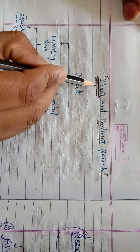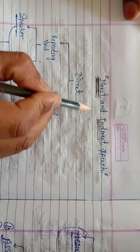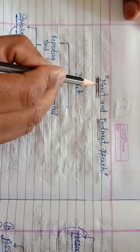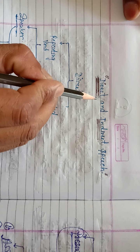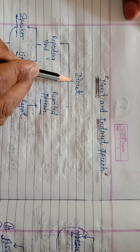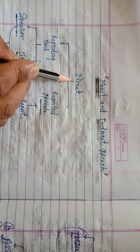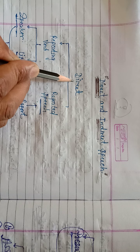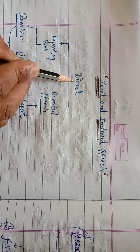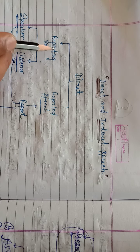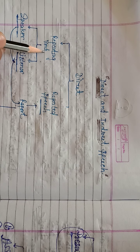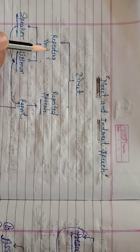First of all, we will ask what is direct speech. There are two parts of direct speech: reporting verb and reported speech.